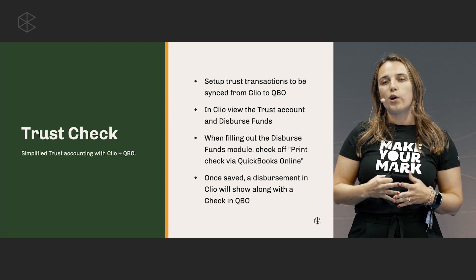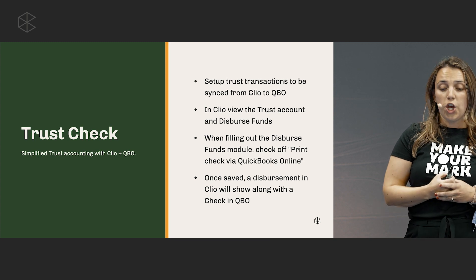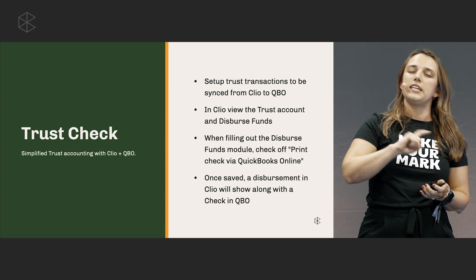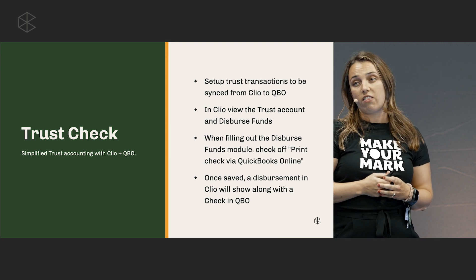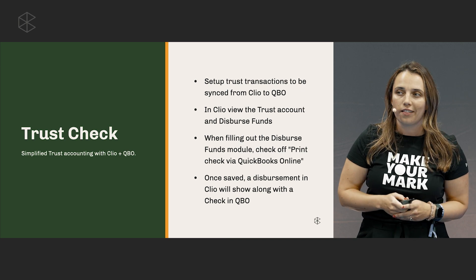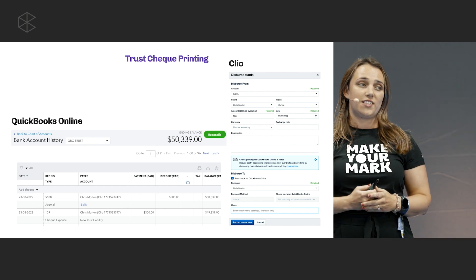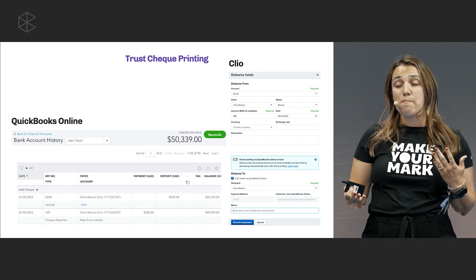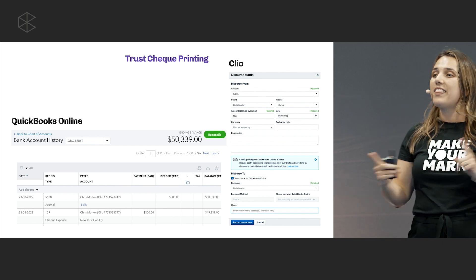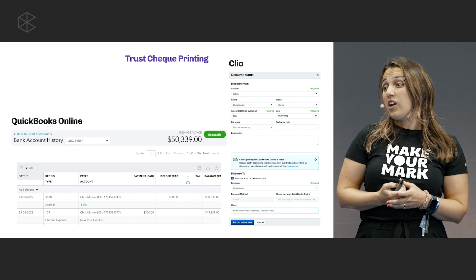Check printing is another really important part of working with funds held in trust. If you need to disburse funds on a client's behalf, you'll export trust check printing from Clio to QuickBooks Online by hitting 'Disburse Funds' and checking 'Print Check via QuickBooks Online.' Once saved, you'll see the transaction along with a QuickBooks-generated check in your QuickBooks Online account. One of my favorite things about this integration is that Clio is smart — it safeguards your funds if the amount input is incorrect, because it already knows what's in the bank thanks to the connection with QuickBooks Online, protecting you from overdrawing on your clients' accounts.